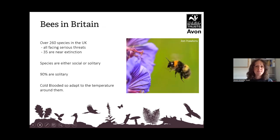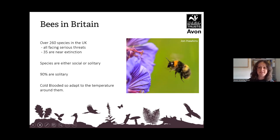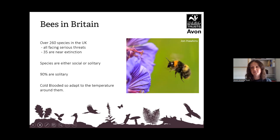Bees in Britain: there are 260 species in the UK and the majority are solitary bees. There are 35 that are near extinction, and all bees are cold-blooded, so they adapt to their environment. Despite the name 'solitary bees', the mother has daughter bees that help her with the young in the nest and collect pollen for their siblings. 70% of bees are mining bees and nest in burrows underground. The males emerge first and wait for the females — they mate and then die fairly quickly after.